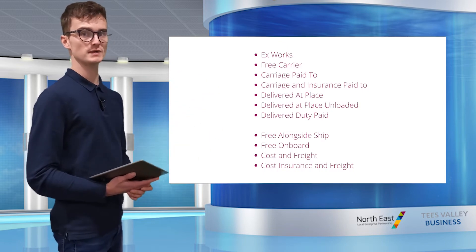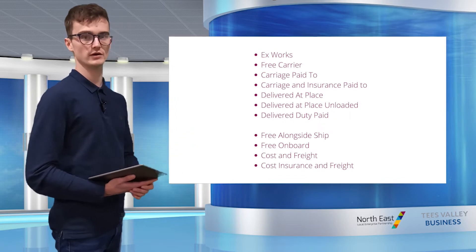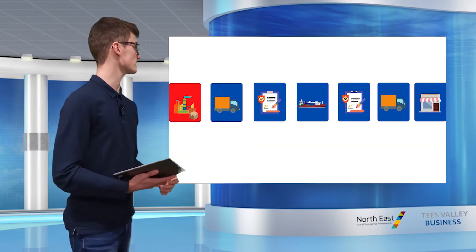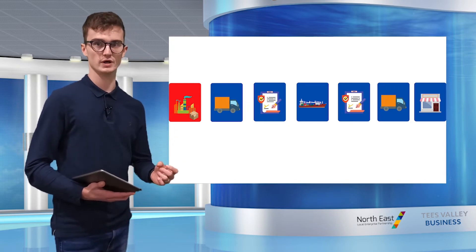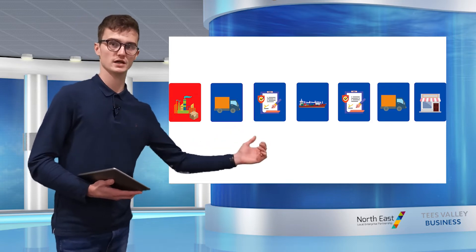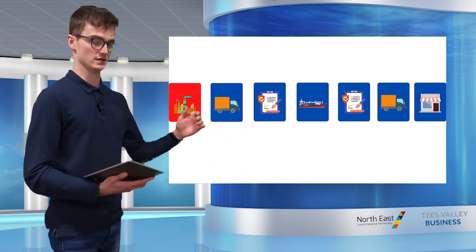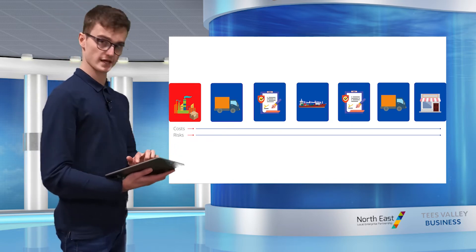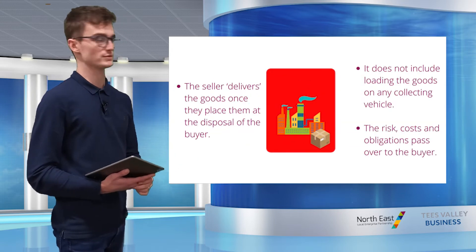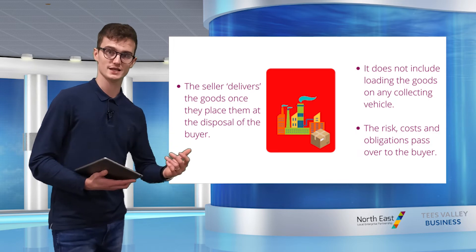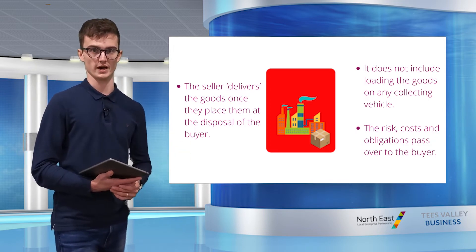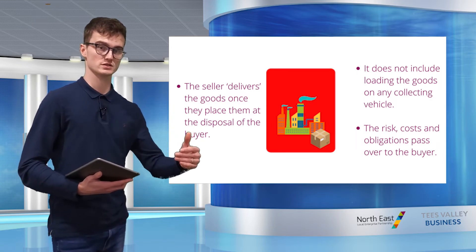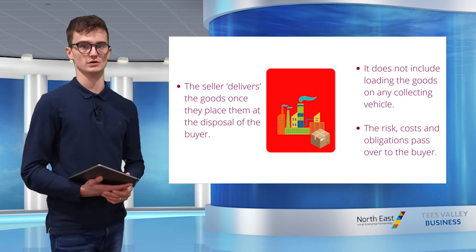The best place to start is by looking at the two extremities on the sliding scale. Firstly, let's have a look at Ex Works, which puts the greatest onus on the buyer. If we remember, the seller is represented in red and the buyer in blue. You can see from this timeline that the buyer takes responsibility for the goods from a very early stage. Under Ex Works, the seller delivers the goods once they've placed them at the disposal of the buyer, and making the goods available does not include loading the goods on any collecting vehicle. At this point, the risk, cost and obligations pass to the buyer.